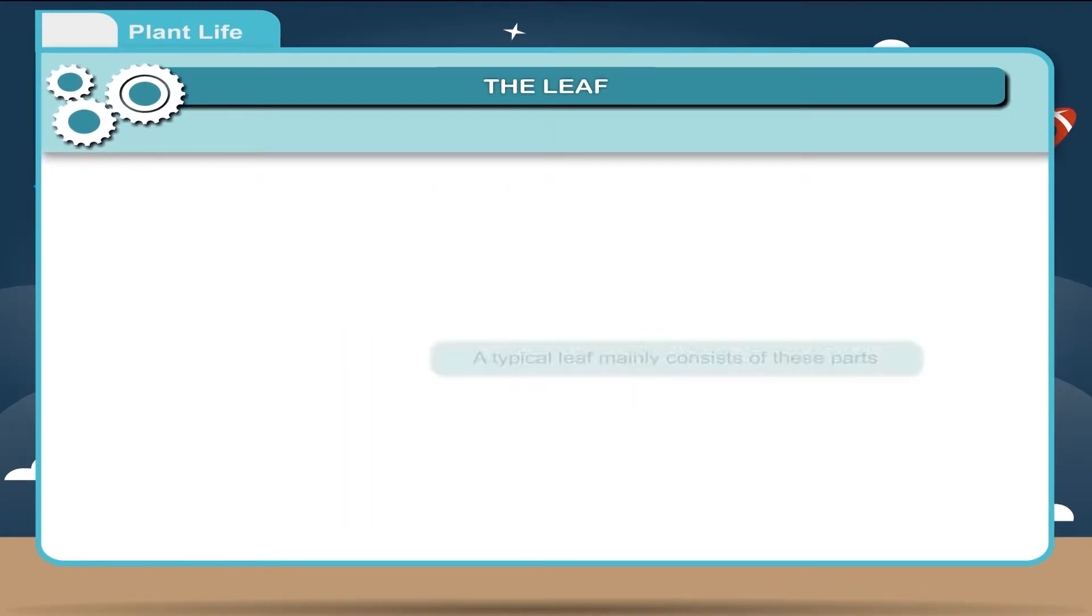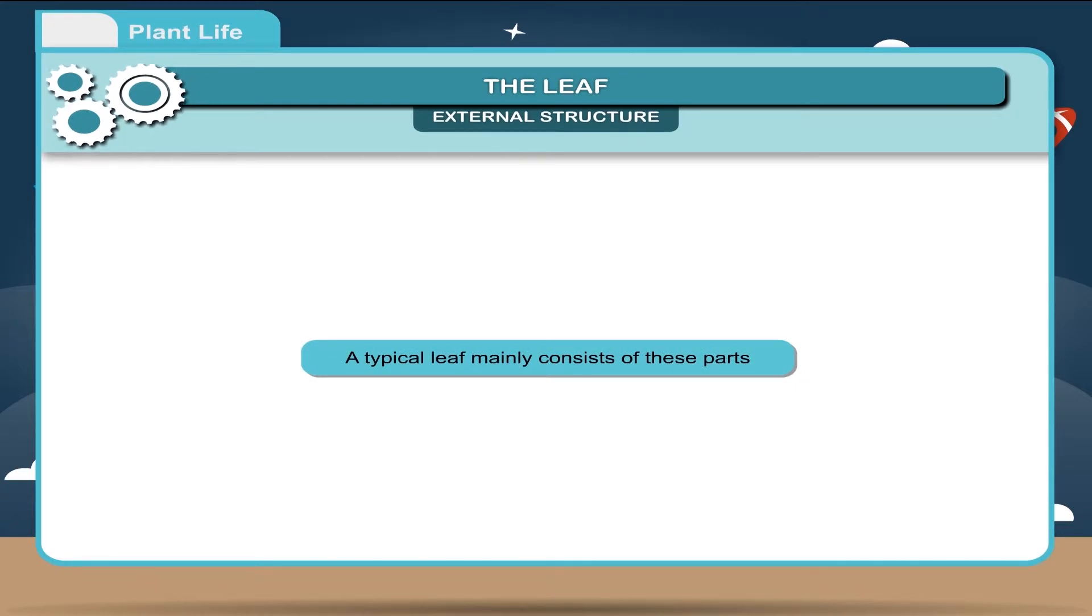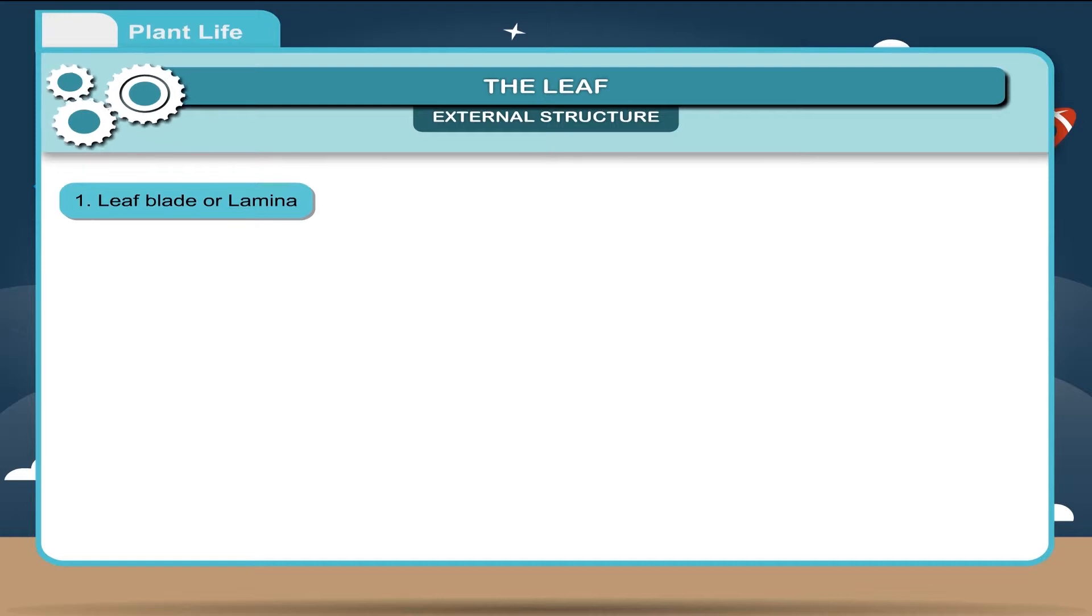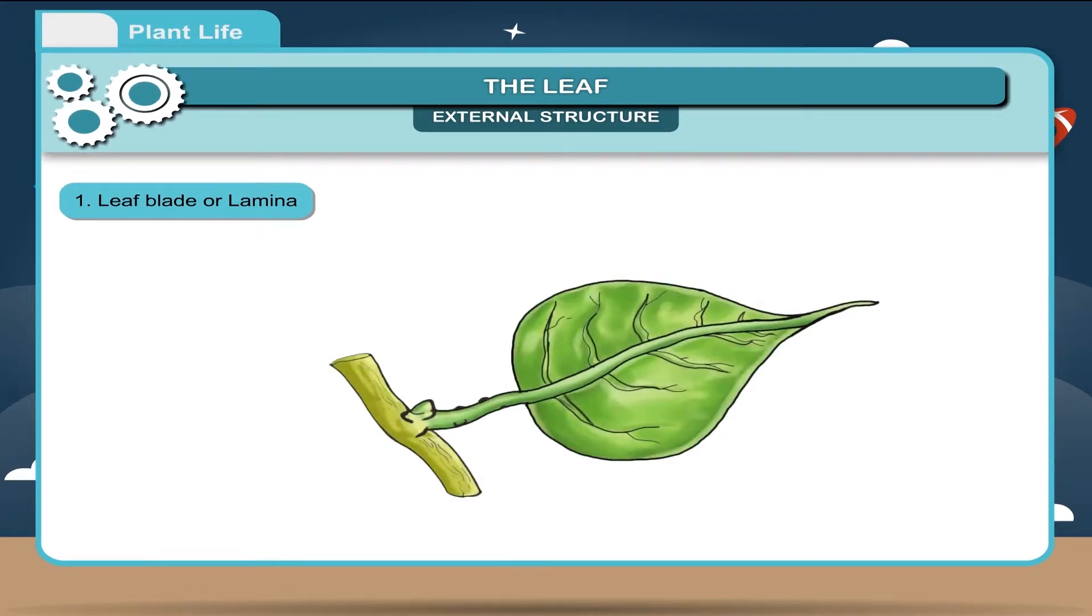External structure. A typical leaf mainly consists of these parts. Leaf blade or lamina. The flat, green part of a leaf is called the leaf blade or lamina. It is generally thin and expanded structure which receives the maximum sunlight.